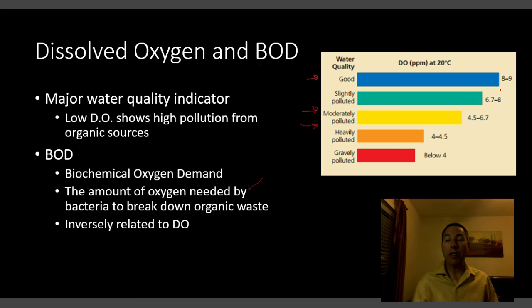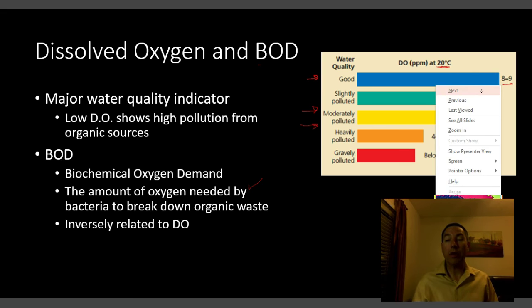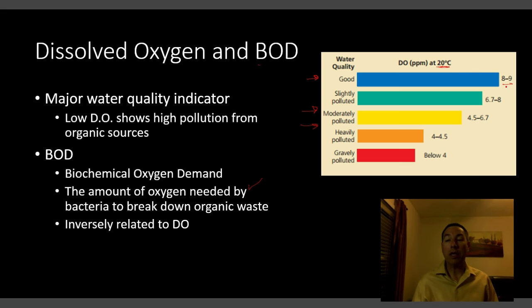Looking at dissolved oxygen in parts per million (also known as milligrams per liter) at 20°C: eight to nine or above is a good level. We start getting slightly polluted below 8. Below 6.7 is moderately polluted. Getting down to 4.5, we start losing fish — it's too low to support fish, and below that it's too low to support just about any kind of life whatsoever. We have lots of pollution if dissolved oxygen levels fall below four parts per million.